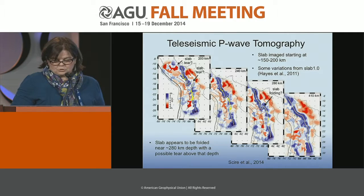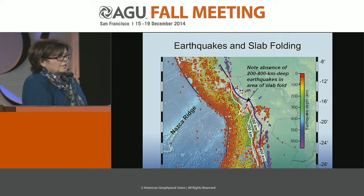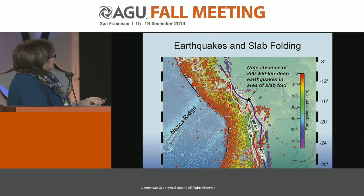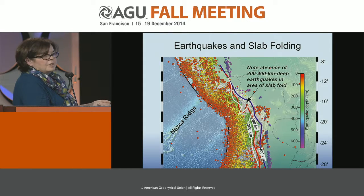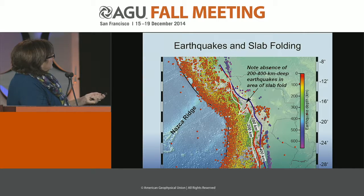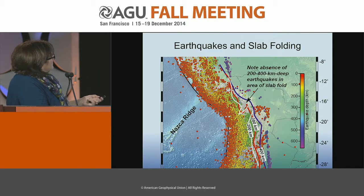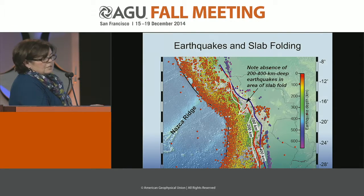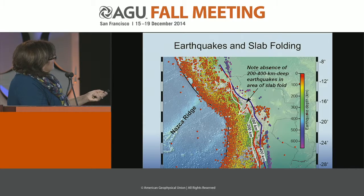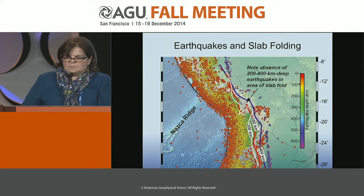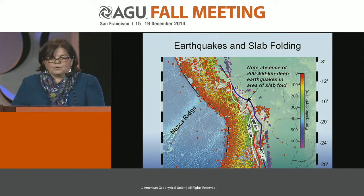Looking at earthquake locations — no matter which global catalog you use — you see a nice depth distribution. The green circles at 200–300 kilometers correspond to the region where we think there might be a tear. There's a noticeable gap in seismicity there, perhaps correlated with the bend or possible tear in the slab. The very deepest earthquakes at 500–670 kilometers are fairly well defined north and south, but are sparse near the bend. Tomographic imaging thus helps us understand slab geometry where earthquakes are absent.